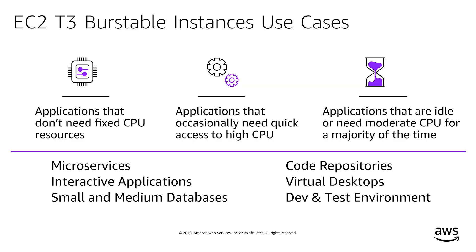EC2 T3 instances are a low cost, burstable general purpose instance that offers a guaranteed level of CPU performance with the ability to burst to high levels of CPU use for transient workloads. T3 instances offer up to 30% improved price to performance over the previous generation T2 instances and are powered by high frequency Intel Xeon scalable processors. T3 is built on the AWS Nitro system, which provides more access to CPU resources, as well as high performance networking and storage.